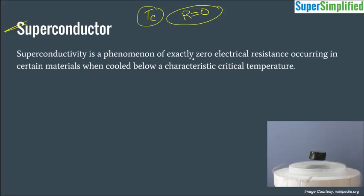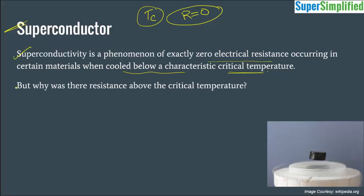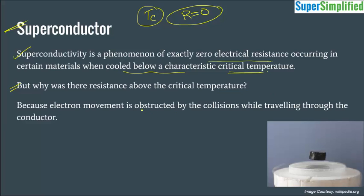Superconductivity is a phenomenon of exactly zero electrical resistance occurring in certain materials when cooled below a characteristic critical temperature. The substances which demonstrate this property are known as superconductors. But why is there resistance above critical temperature in the first place? Because electron movement is obstructed by collisions while traveling through the conductor.